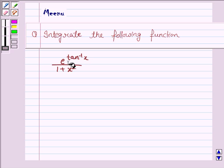The given function is e to the power tan inverse x upon 1 plus x square. Let us now move on to the solution.